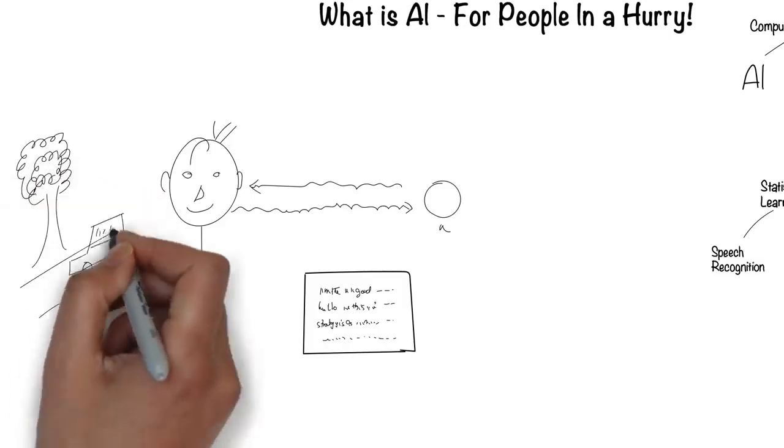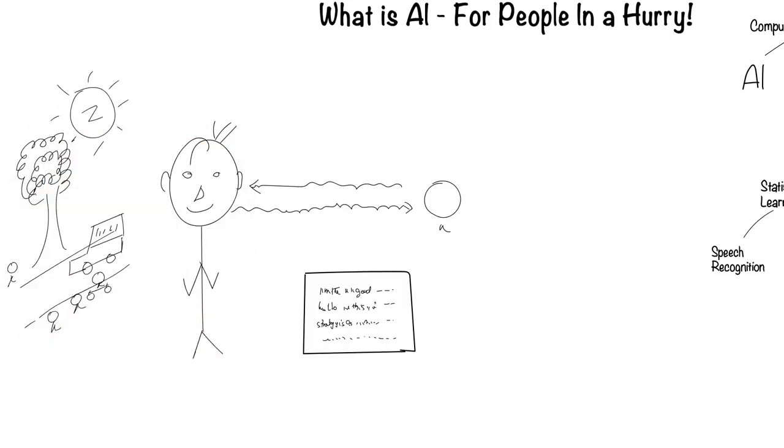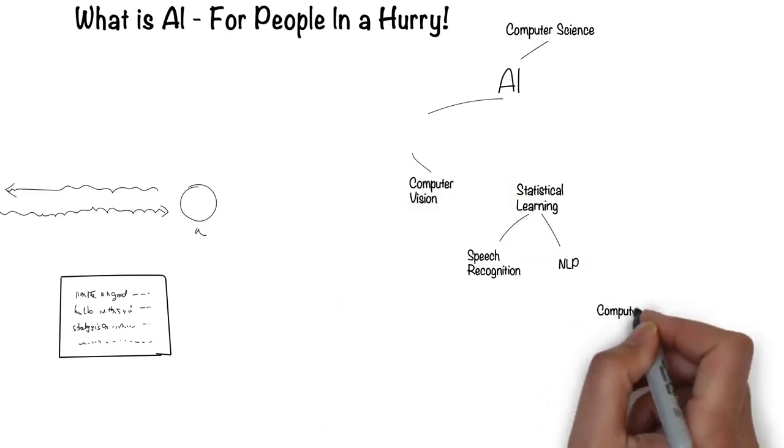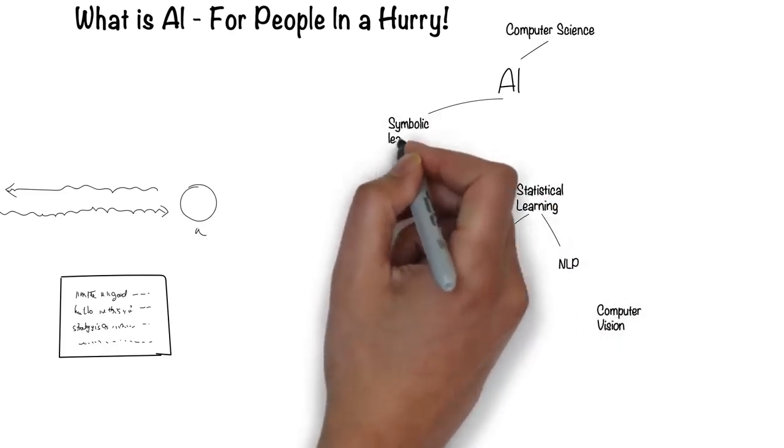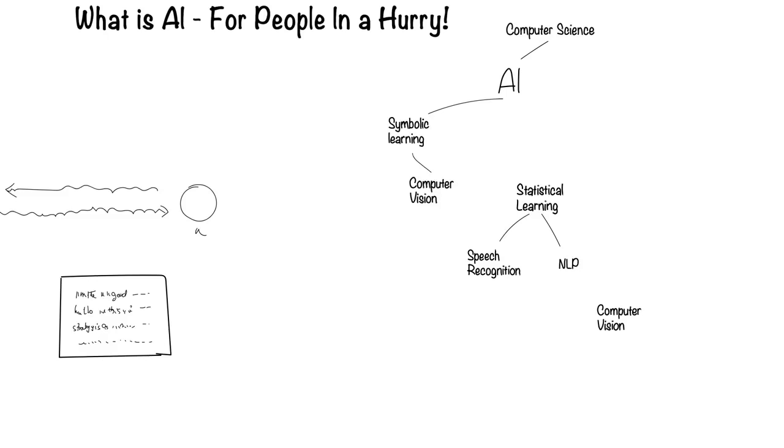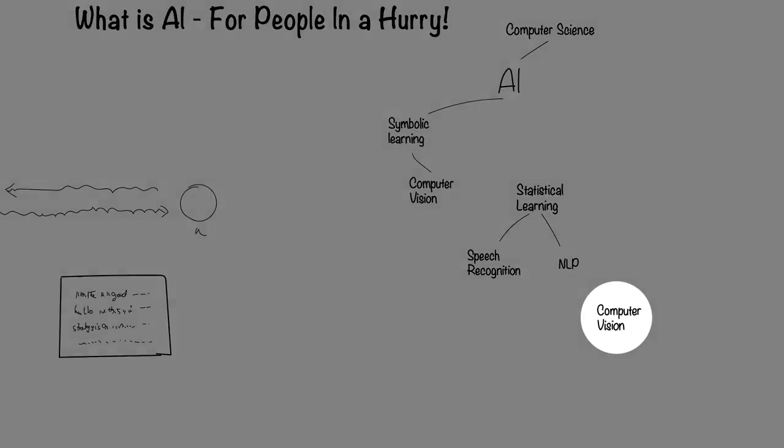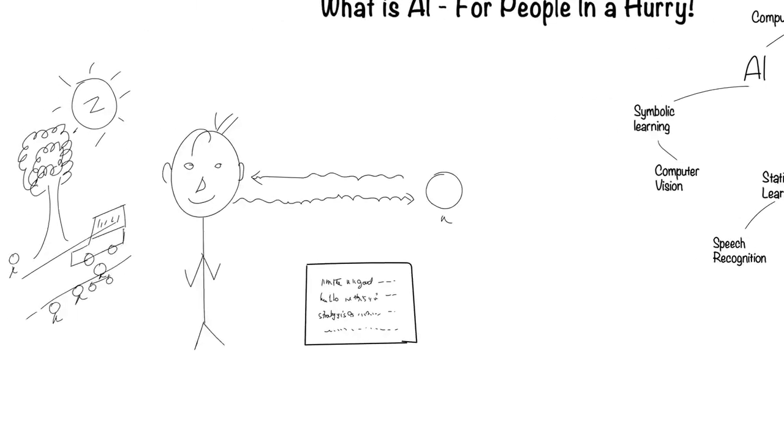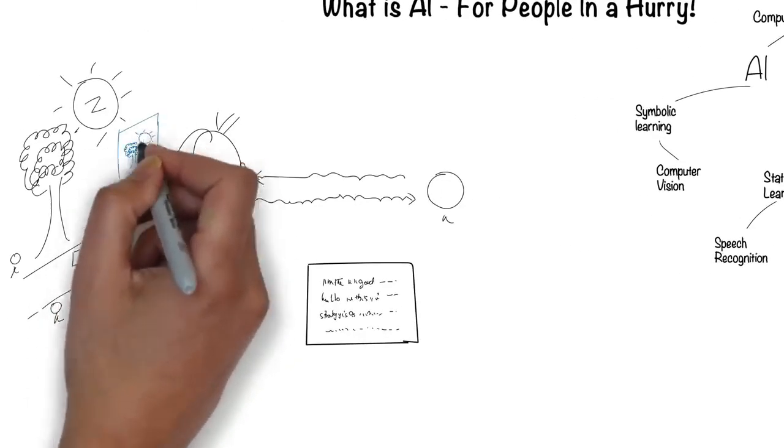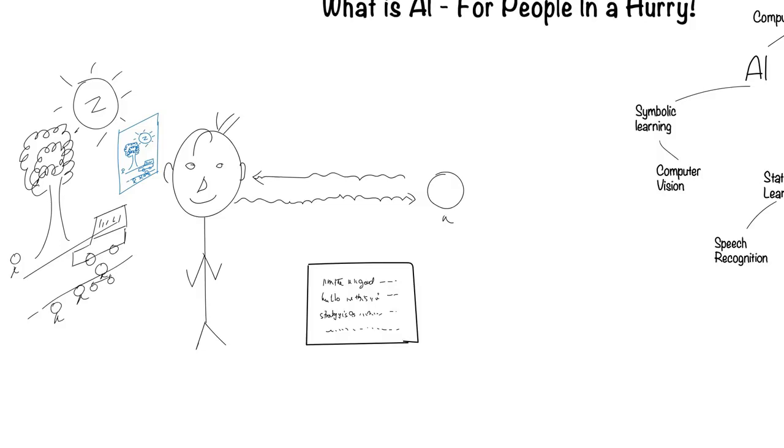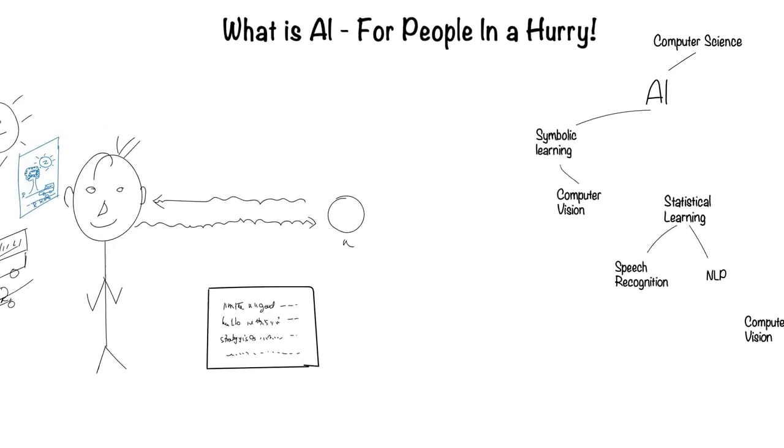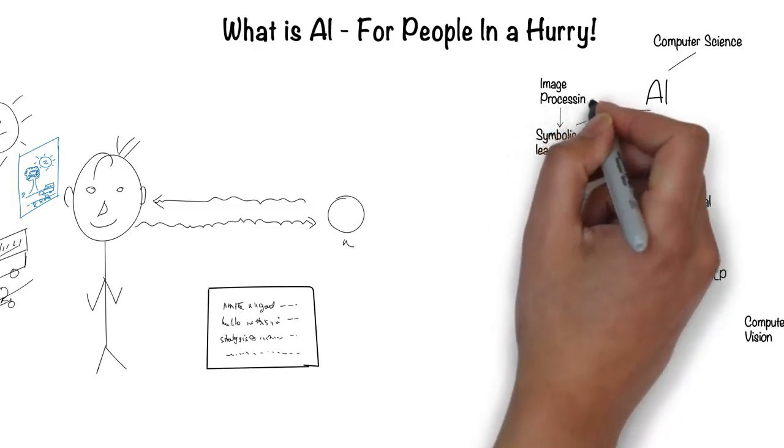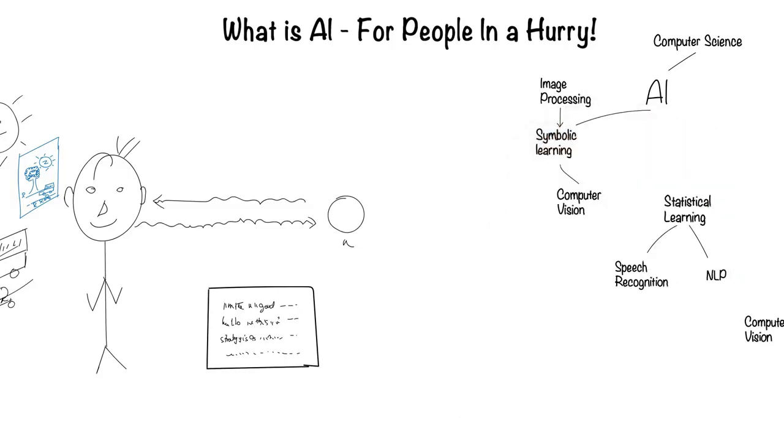Humans can see with their eyes and process what they see. This is the field of computer vision. Computer vision falls under the symbolic way for computers to process information. Recently, there's been another way, which I'll come to later. Humans recognize the scene around them through their eyes, which create images of that world. This field of image processing, even though is not directly related to AI, is required for computer vision.